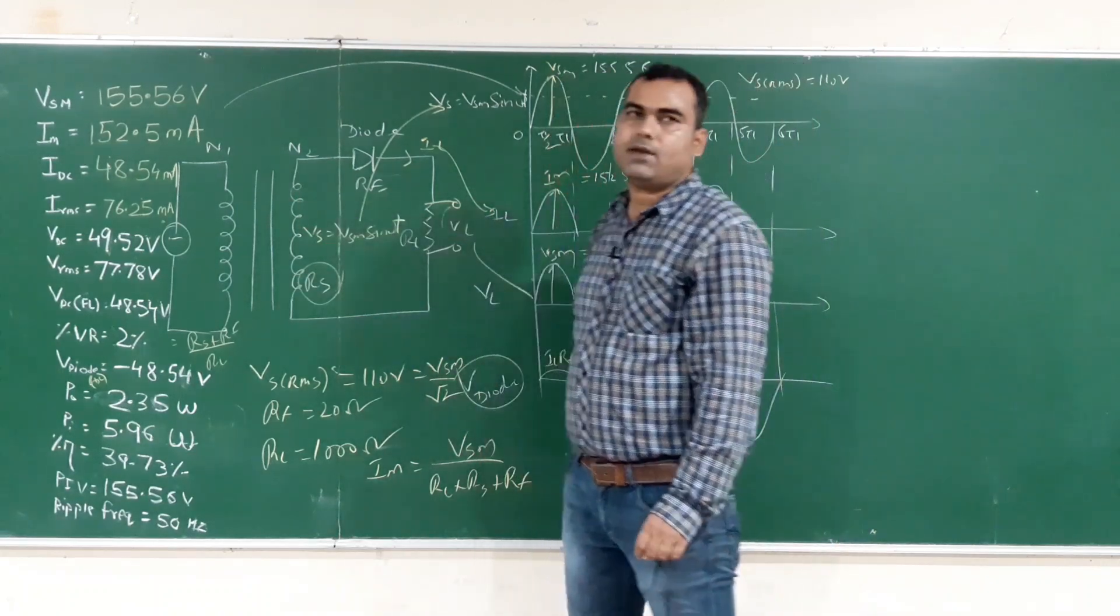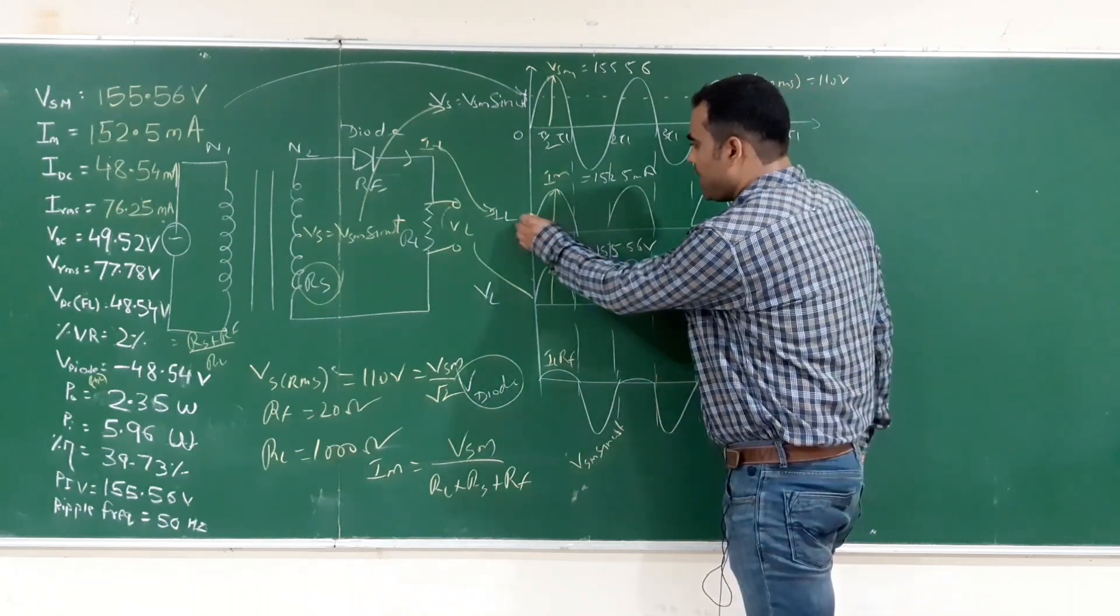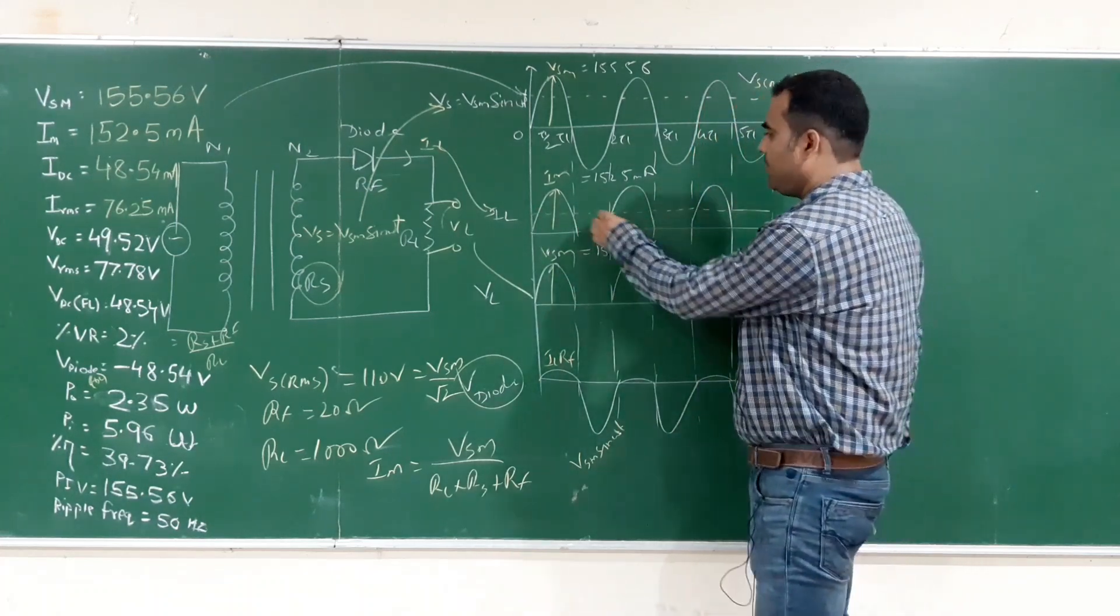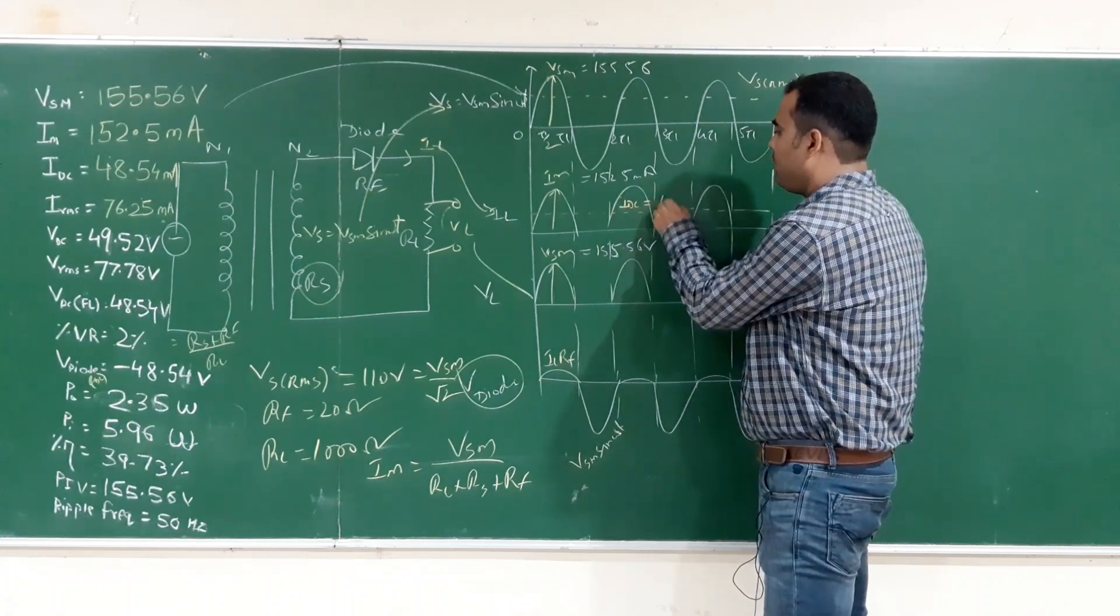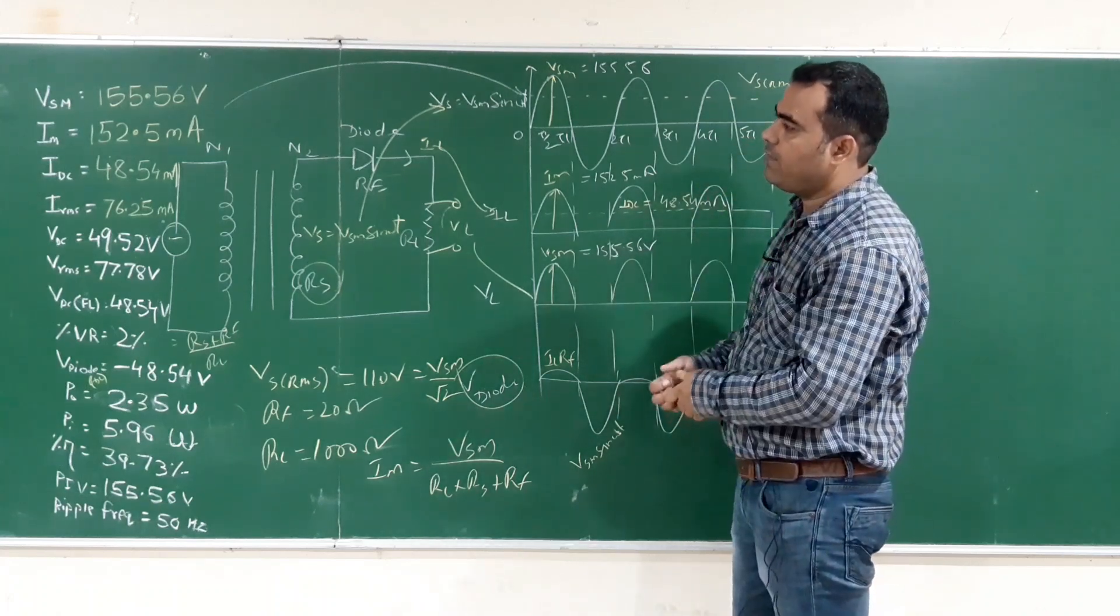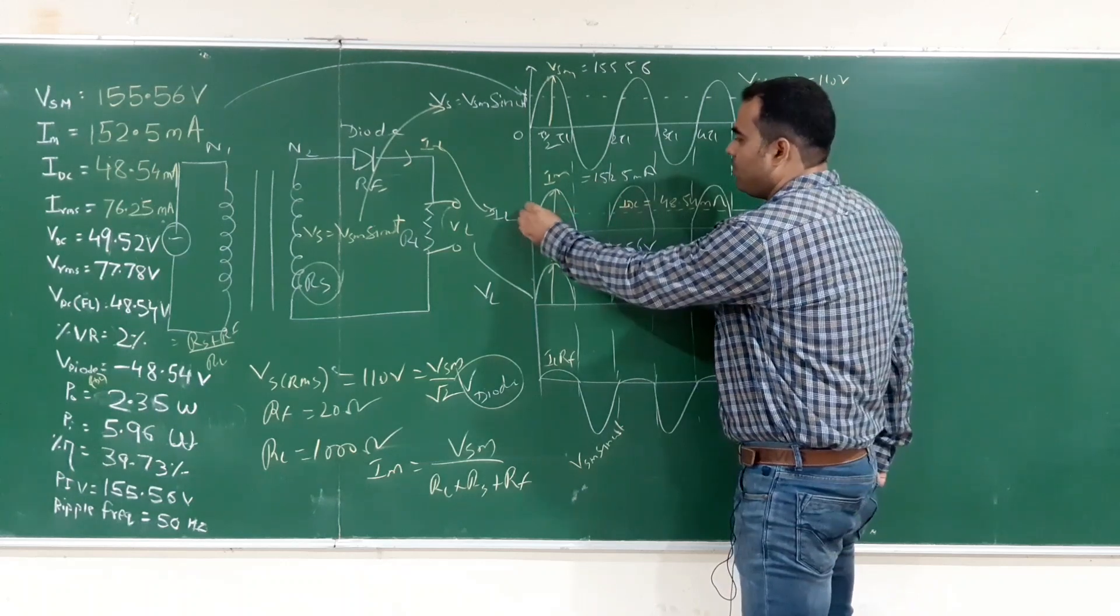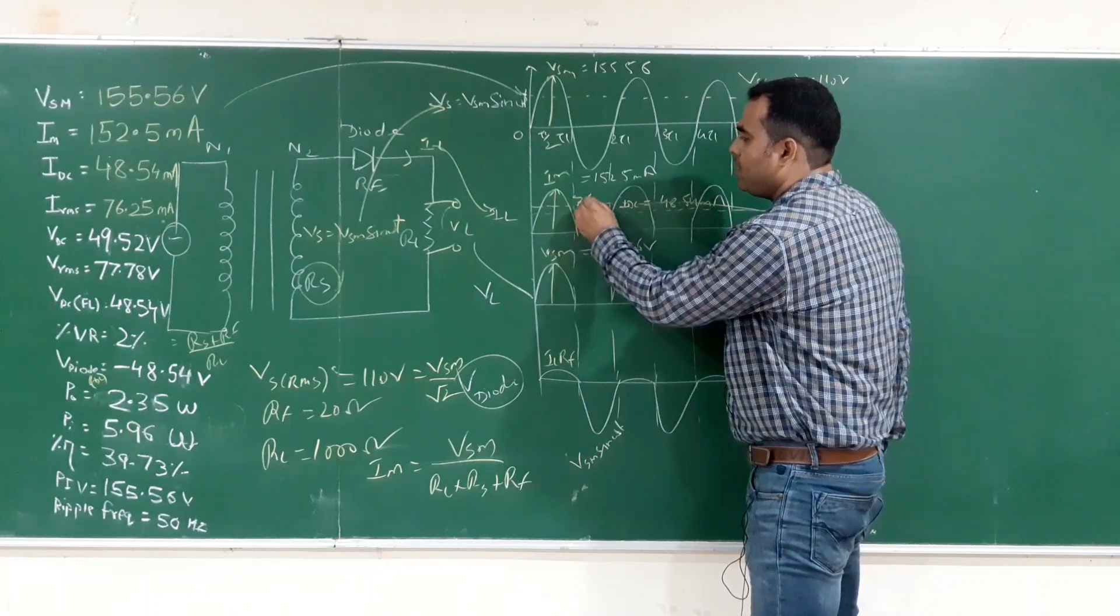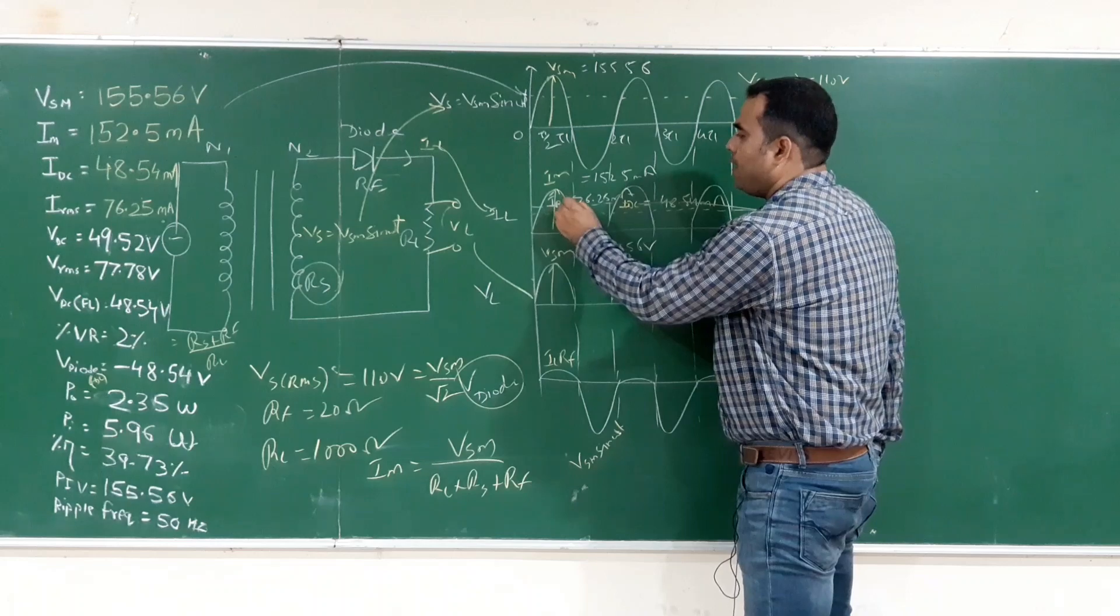Next, IDC equals to 48.54 mA. This current, doing IM by pi on the peak value, we get IDC equals to 48.54 milliampere. Next IRMS which is 76.25. Doing half of 152, we get 76.25 milliampere which is IRMS.